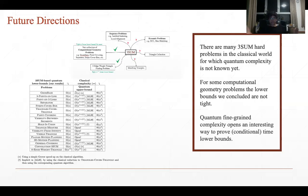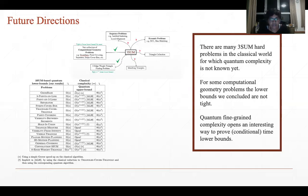Finally, to conclude: we believe quantum fine-grained complexity opens an interesting way to prove conditional time lower bounds, and especially for problems with superlinear algorithms, this seems to be the best way forward. Thank you for your attention.